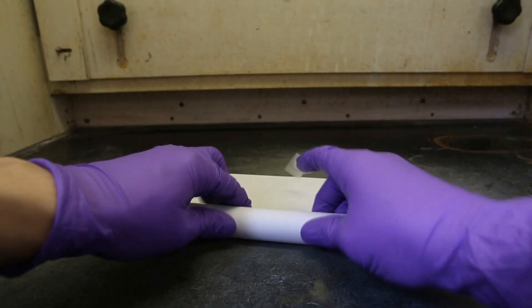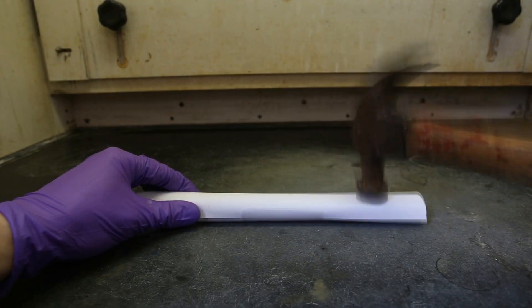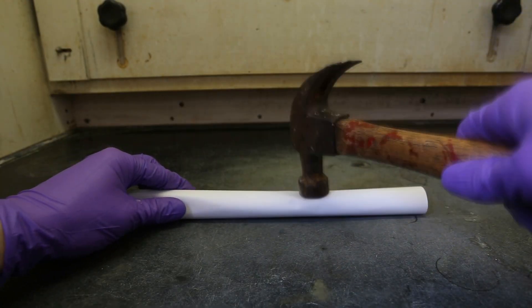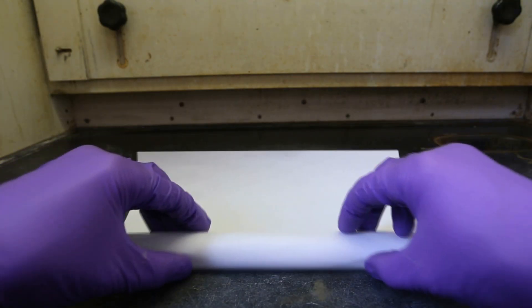Next, roll up the test tube in a piece of paper and tape it to keep it from unrolling. Lightly tap your test tube with a hammer just to break the glass apart. Unroll the paper and start picking out all the broken pieces of glass.